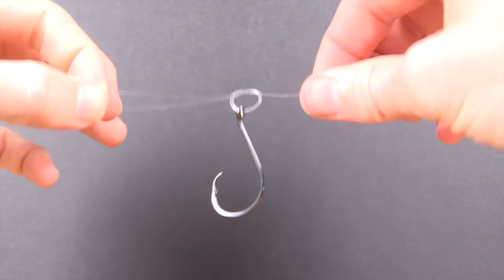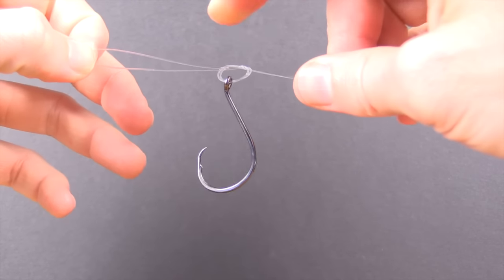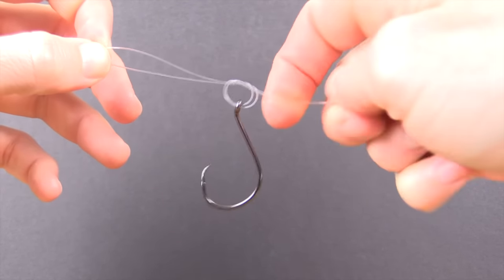Just to explain where we are, all we've done is put the hook on a doubled line and did a single overhand knot. That hook is sitting inside of that knot right now.